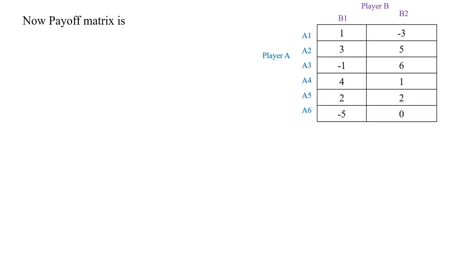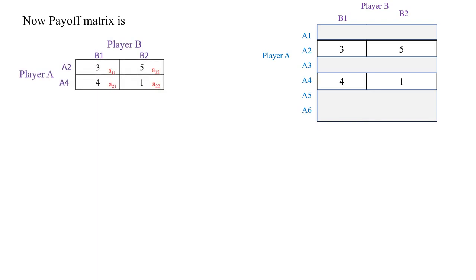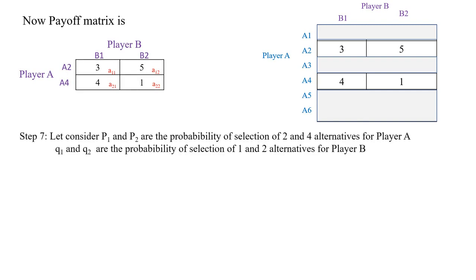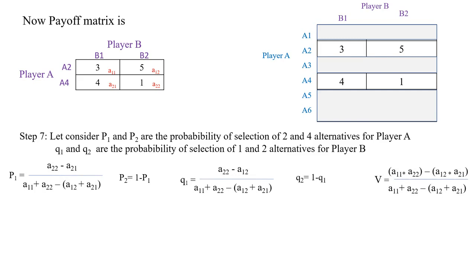The payoff matrix is now reduced to a 2×2 matrix considering only strategies A2 and A4 for player A, and B1 and B2 for player B. Let P1 and P2 be the probabilities for player A selecting the second and fourth alternatives respectively. Let Q1 and Q2 be the probabilities for player B selecting strategies one and two respectively.